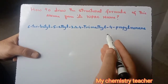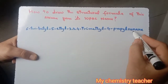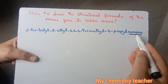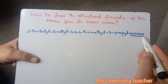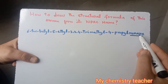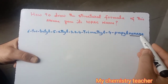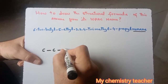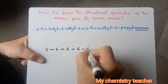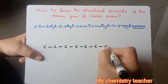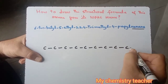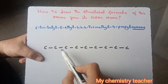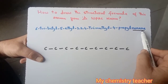For this specific compound, we will first look at the last part of the name, which is 'nonane'. Nonane represents the parent name, meaning the longest continuous chain has nine carbon atoms. So first of all we will draw a nine-carbon chain: one, two, three, four, five, six, seven, eight, and nine.